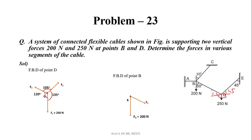The BD segment force acts at point B in the opposite direction to F3 — so this force is also labeled F3, acting in the opposite direction. The AB segment force acts along AB; let this be force F5.